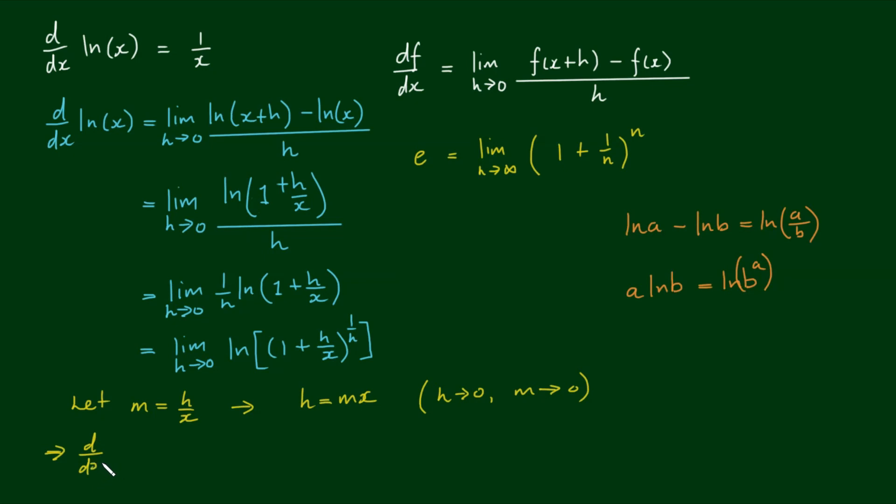So we can rewrite the derivative. The derivative of the log of x with respect to x is now equal to the limit as m approaches 0 of ln[(1 + m)^(1/mx)]. Now the 1/mx here I'm going to write as (1/m) times (1/x). And now using this log law the other way around, I can rewrite this as the limit as m approaches 0 of (1/x) times ln[(1 + m)^(1/m)].